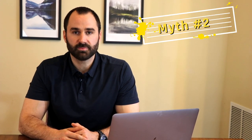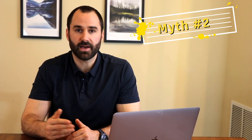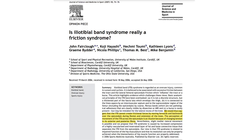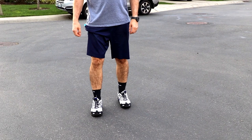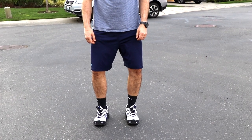Myth number two: IT band syndrome is caused by friction. Historically, we thought the IT band inserts in only one spot and that as you bend your knee it would pop back and forth, causing irritation of the underlying tissues. However, a study by Faircloth et al. in 2007 found that the IT band cannot create frictional forces by moving forwards and backwards over the epicondyle during flexion and extension, and that the perception of this movement is an illusion due to changing tensions in anterior and posterior fibers. If the issue is not caused by friction and the IT band can't be stretched, the current theory is that it may be excessive compression — where the knee excessively goes inwards or you're bow-legged, combined with training errors and weak glutes, creating a perfect storm for pain.